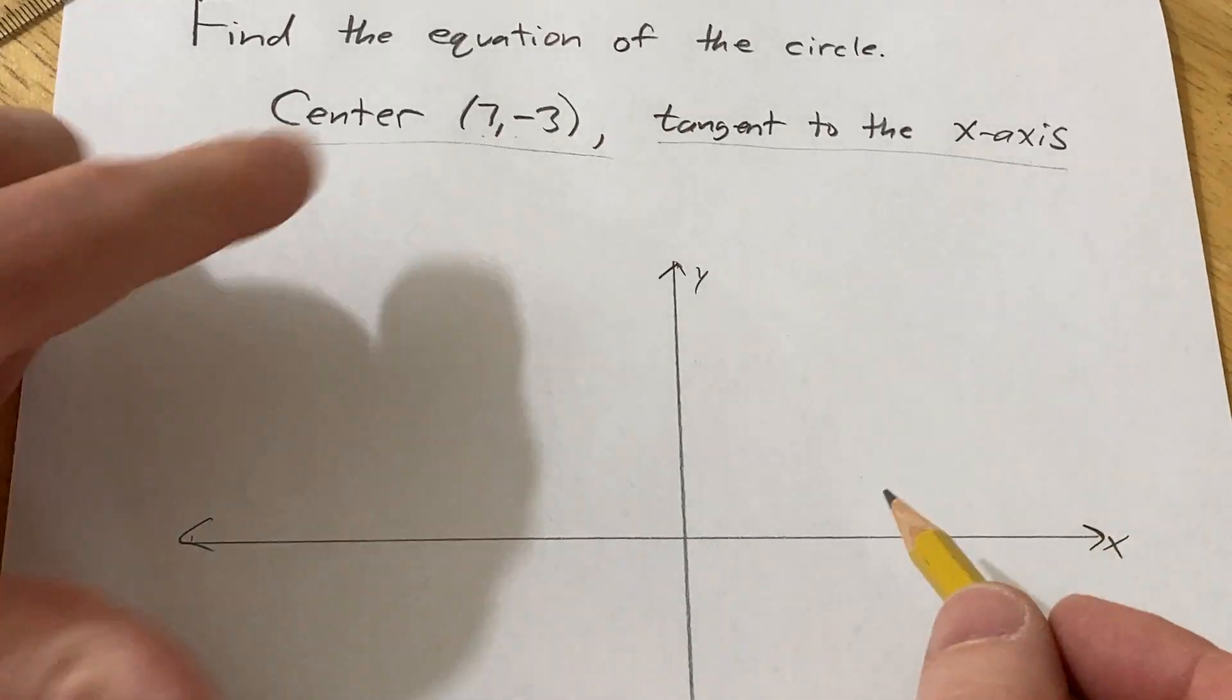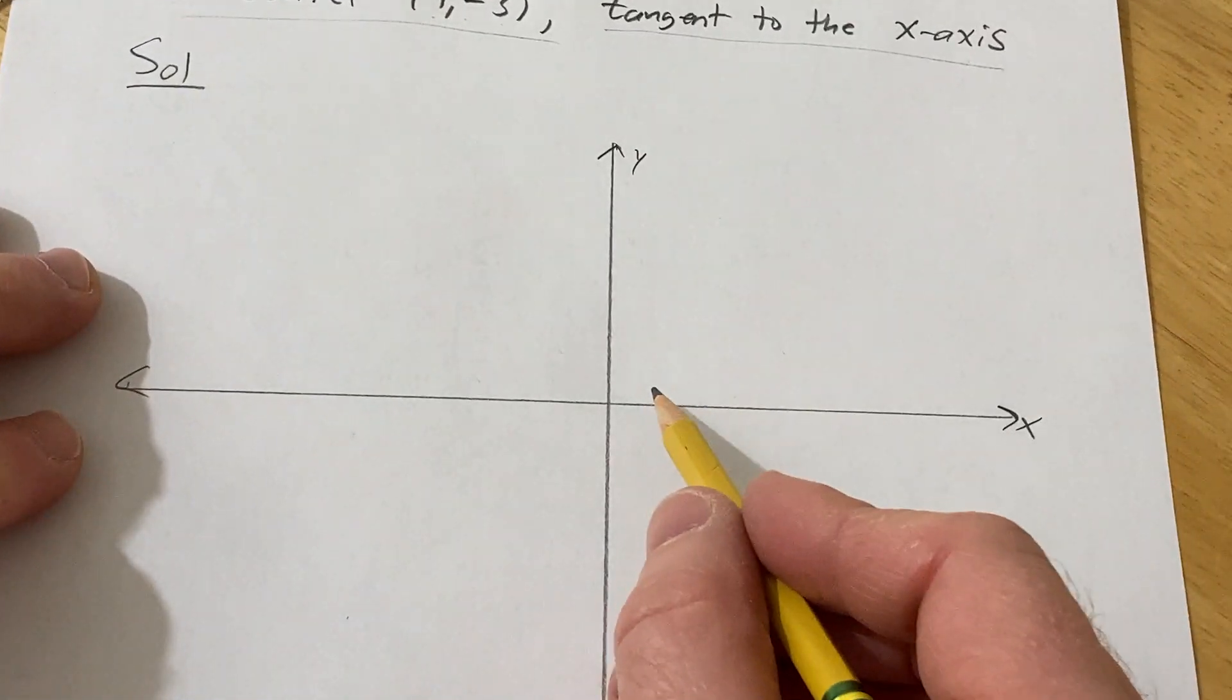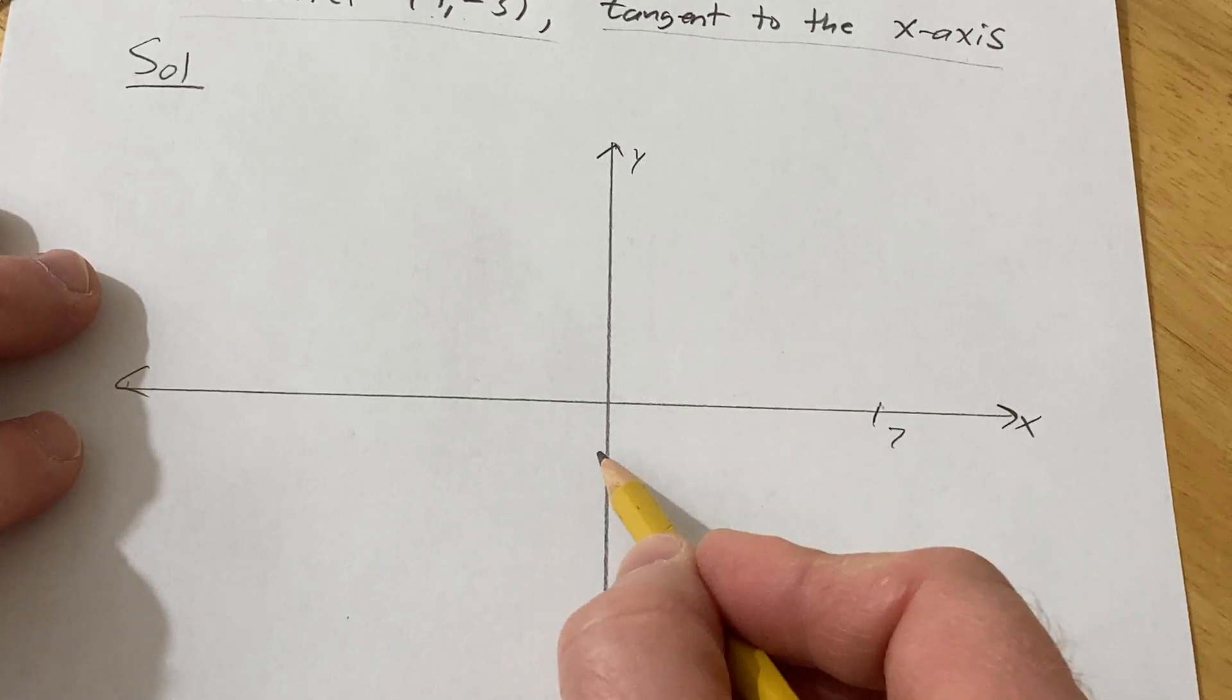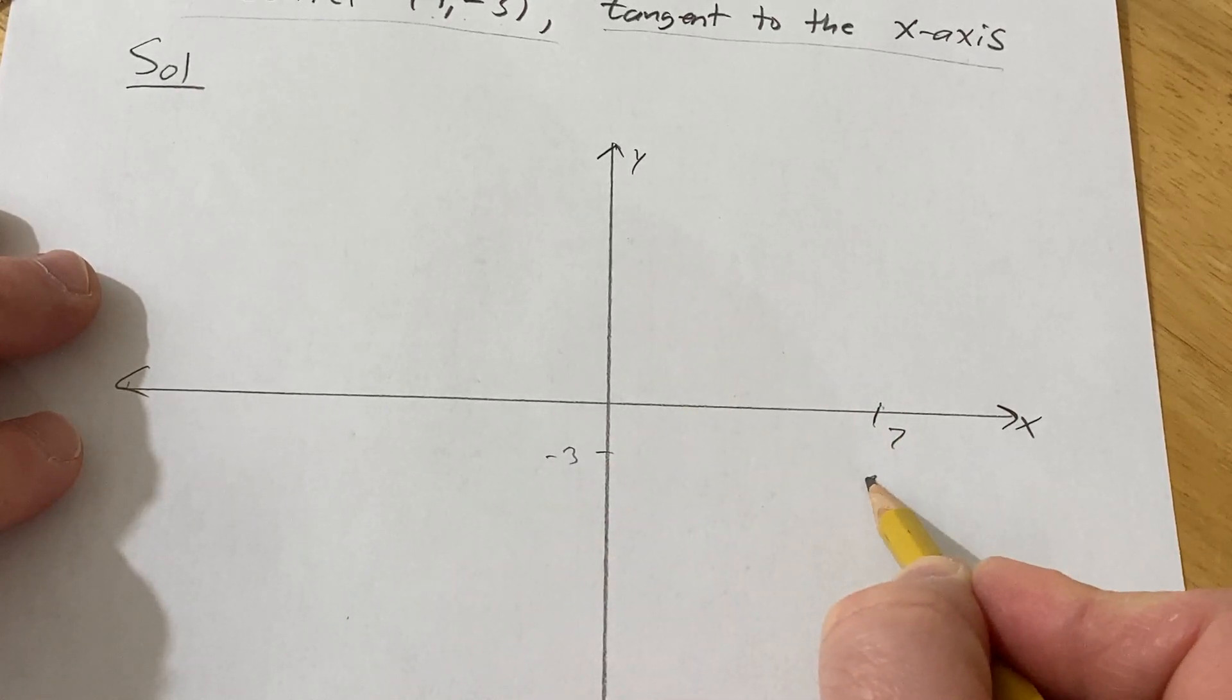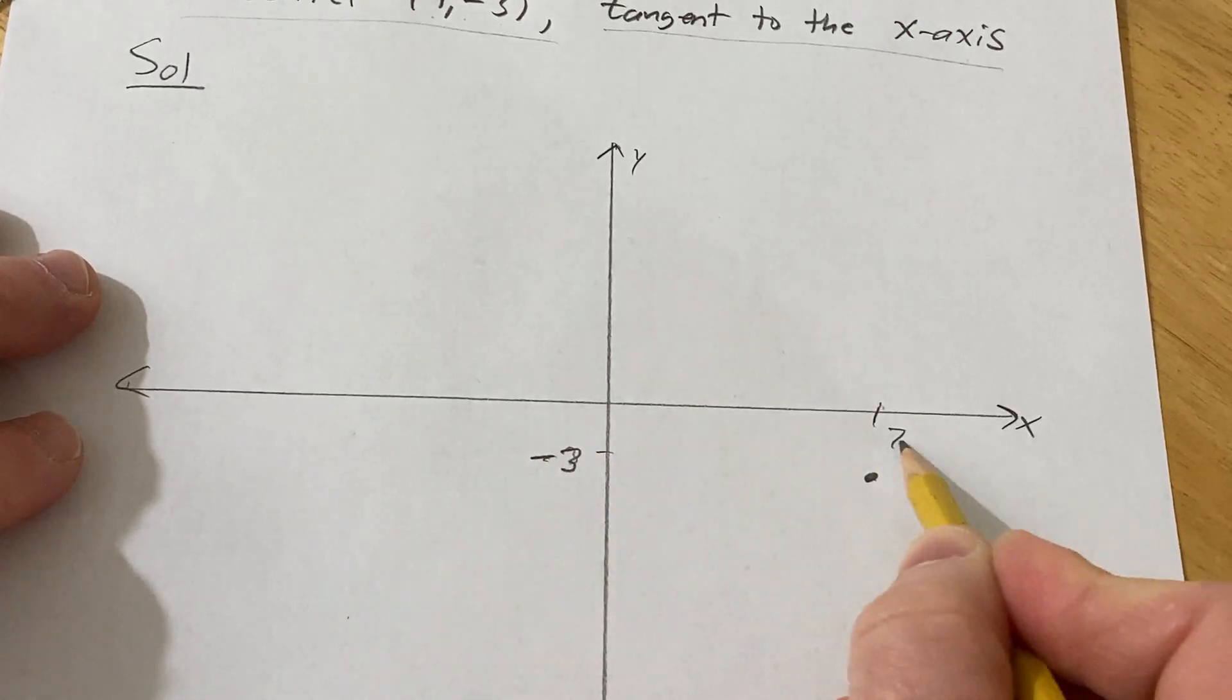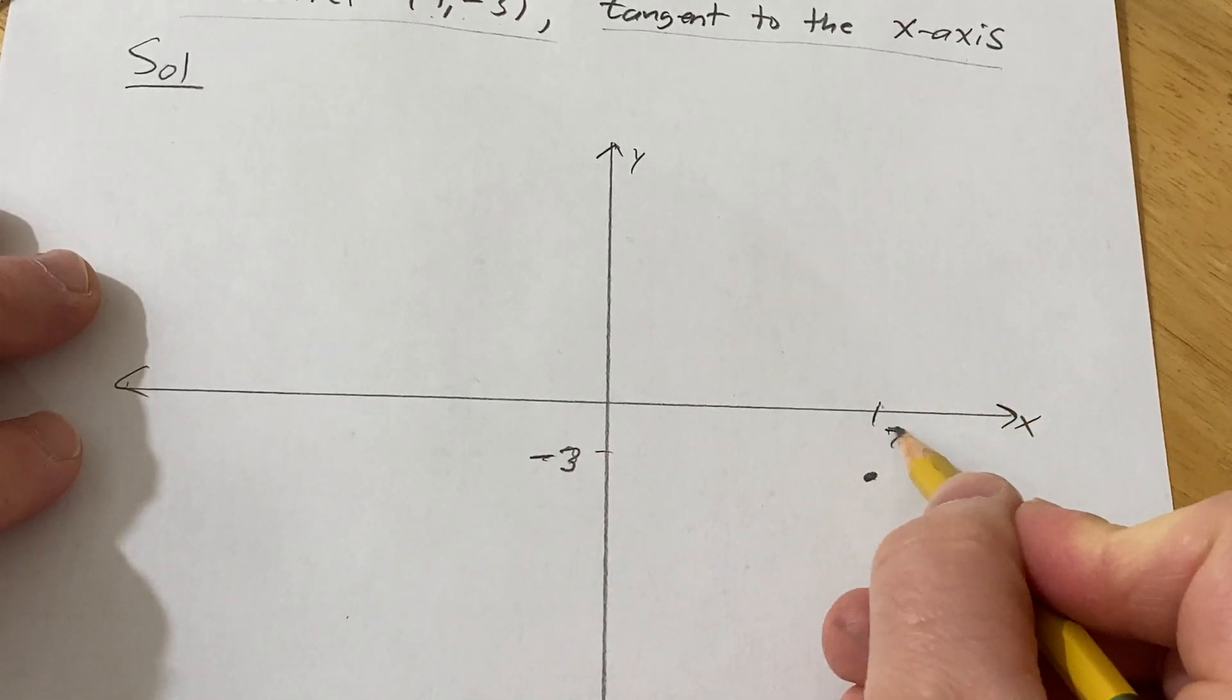And the center is 7, -3. So let's say this is 7 and this is negative 3. So this will be the center of the circle here. This is negative 3 and this is 7. Just a rough sketch.